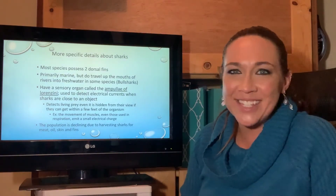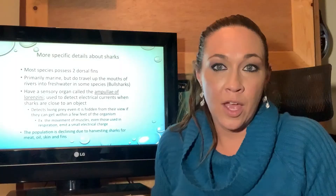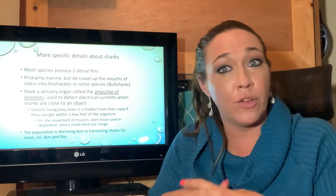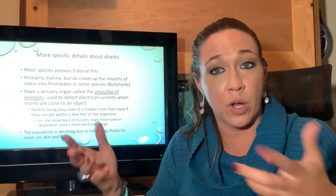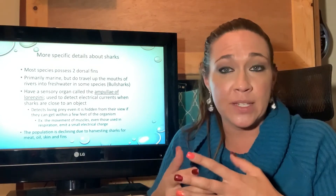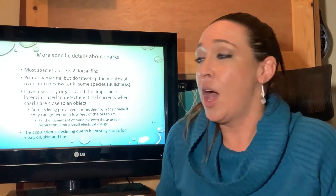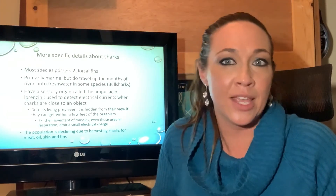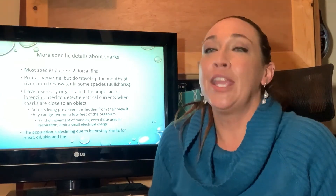Most sharks have two dorsal fins and are marine, though some — called euryhaline species — can tolerate a wide range of salinities and travel into freshwater. Bull sharks are a well-known example. Some species also use estuaries to pup, gaining a feeding advantage in areas other sharks can't access.